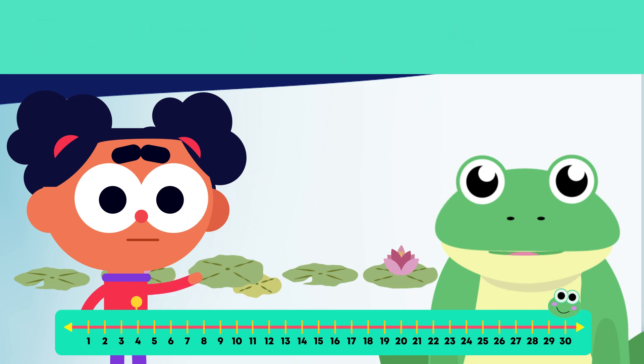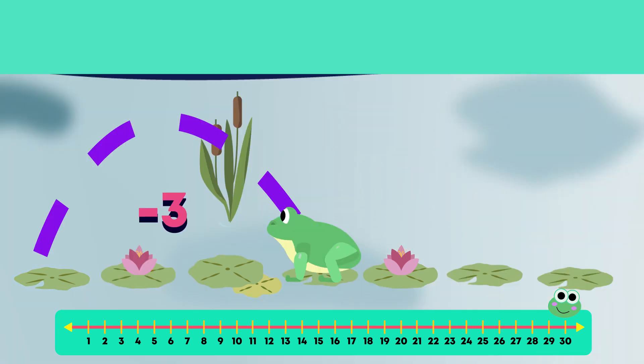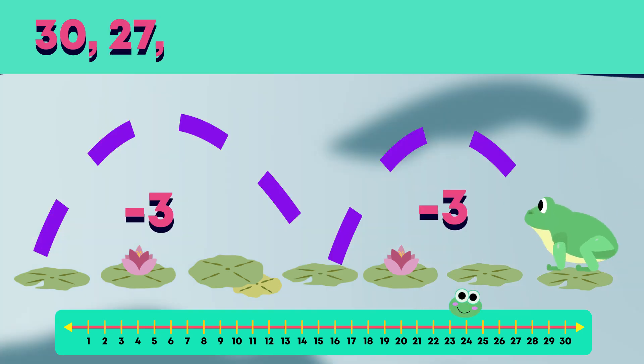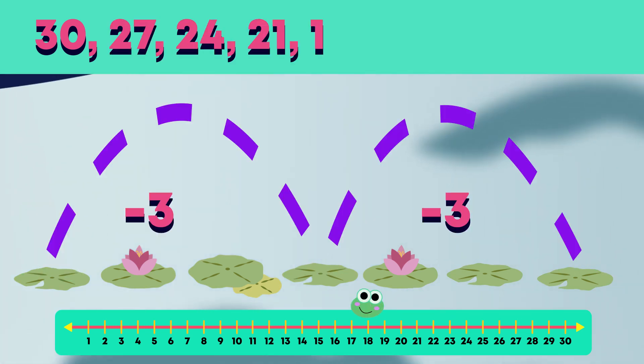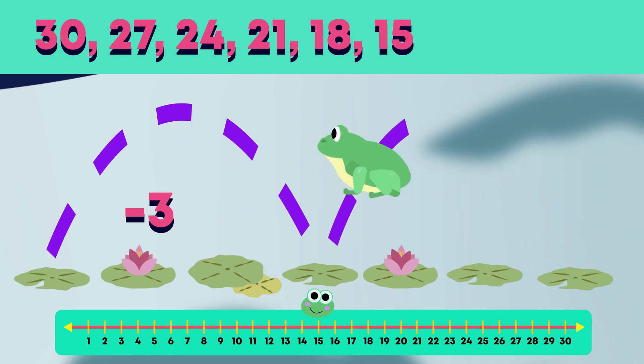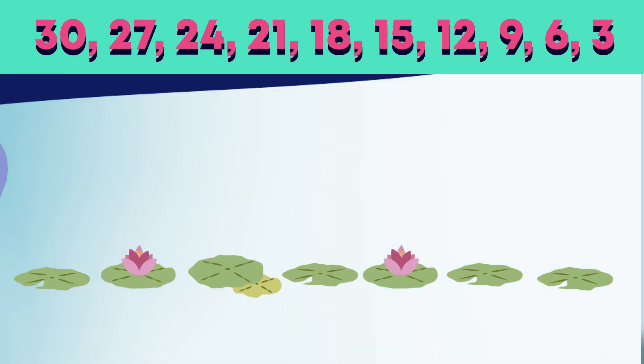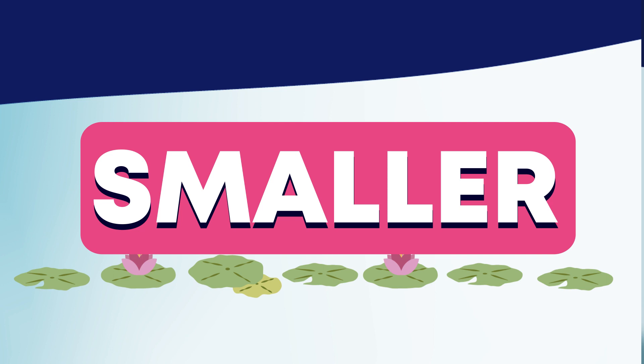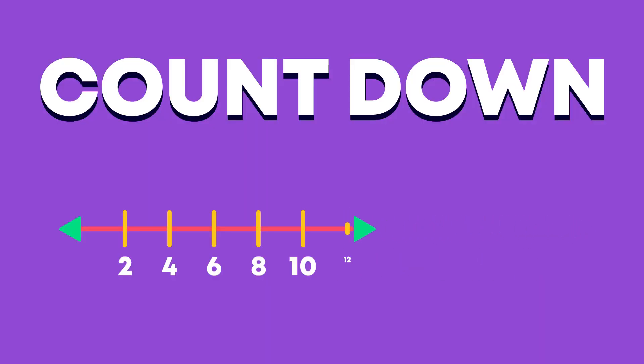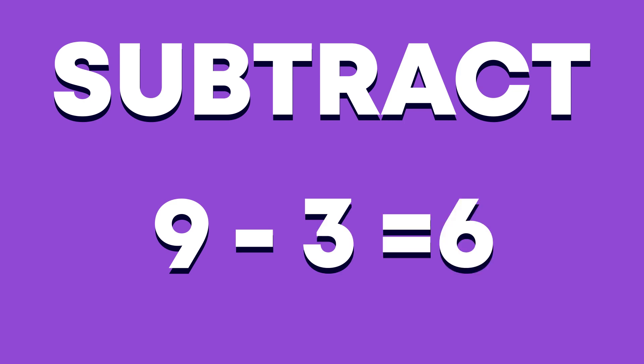Let's see how to count backwards in 3s. Do the numbers get bigger or smaller as we count backwards in 3s? Smaller. Well done. When we count down or backwards in 3s, we subtract or take away 3 each time.